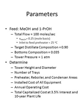We wish to determine the tower height and diameter, how many trays are necessary to achieve the separation, what the areas of the preheater, reboiler, and condenser are, what the installed cost of all the equipment will be, the annual operating cost for utilities, and the total capitalized cost using a 3.5% interest rate and a 10-year plant life.